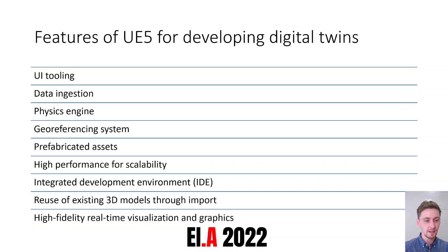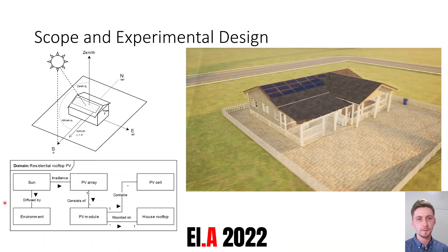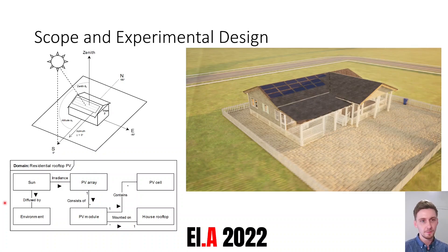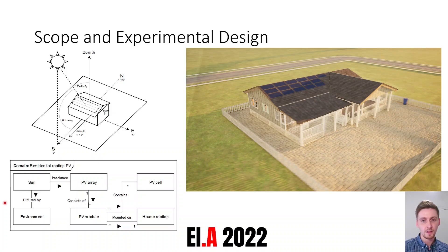Unreal Engine 5 also allows reuse of existing 3D models, for example from CAD files, and provides high-fidelity real-time visualization and graphics capabilities. The scope of this study involves the planning of deployment of a PV system — specifically a residential rooftop PV system with no battery or inverter connected, for simplicity. We want to see if we can use Unreal Engine 5 to estimate the annual production of a PV system, and since we are in the planning phase, there is no physical twin yet, so the use case is for simulation purposes.